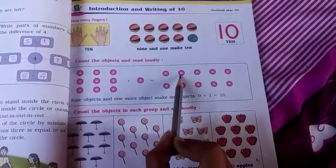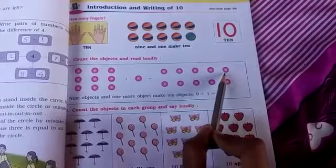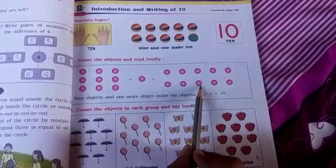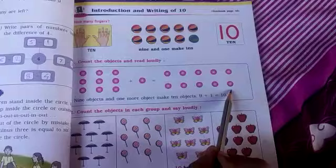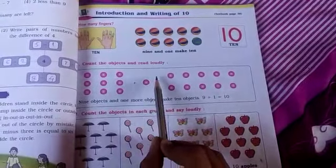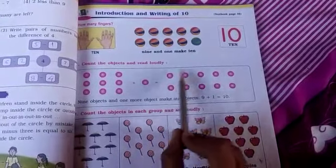1, 2, 3, 4, 5, 6, 7, 8, 9, 10. 9 object and 1 more object make 10 objects.